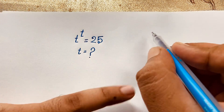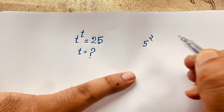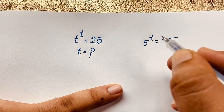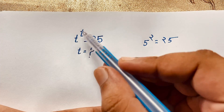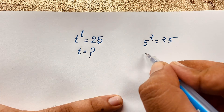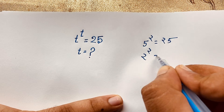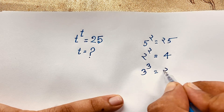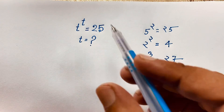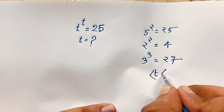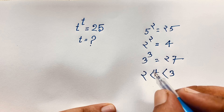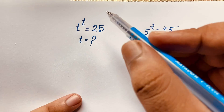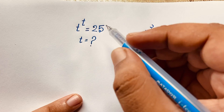First of all, we have t to the power of t. We know that 5 to the power of 2 is equal to 25. Now this is t to the power of t — both the exponent and base are the same. You can see that 2 to the power of 2 is equal to 4, and 3 to the power of 3 is equal to 27. So this t is between 2 and 3: t is greater than 2 and less than 3. It is an increasing function, and t to the power of t equals 25.